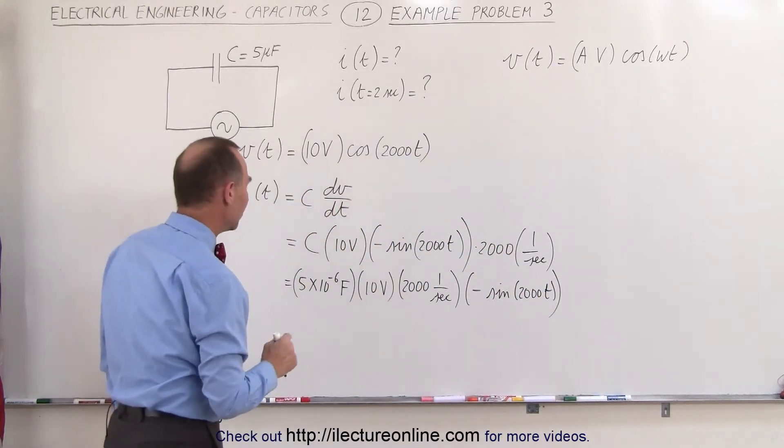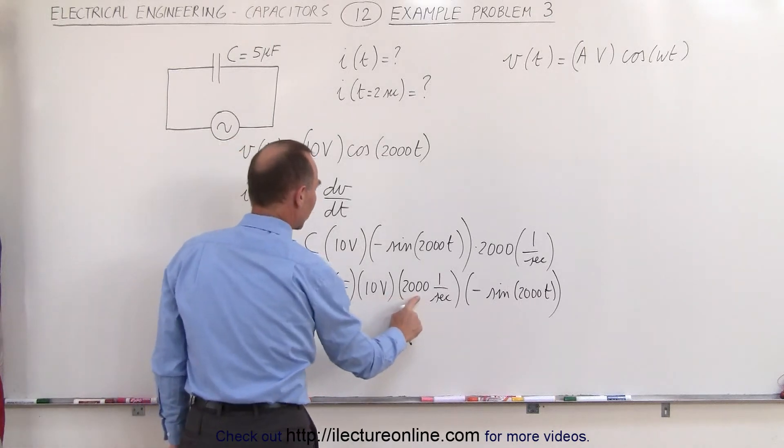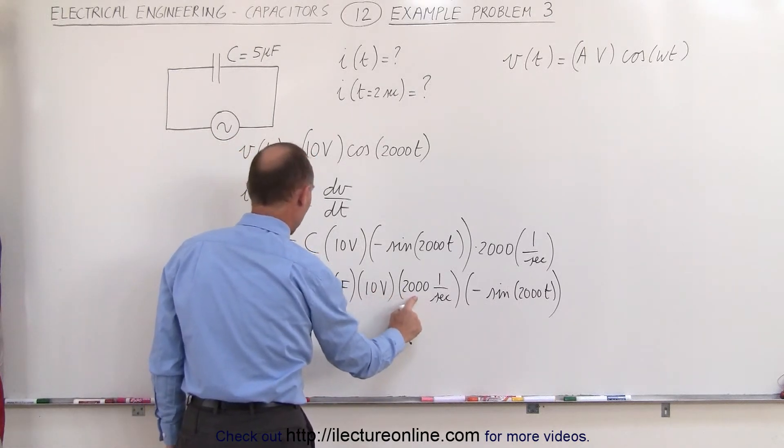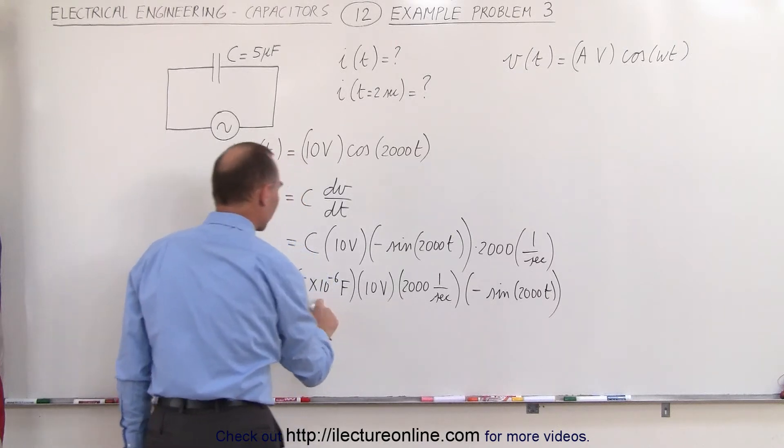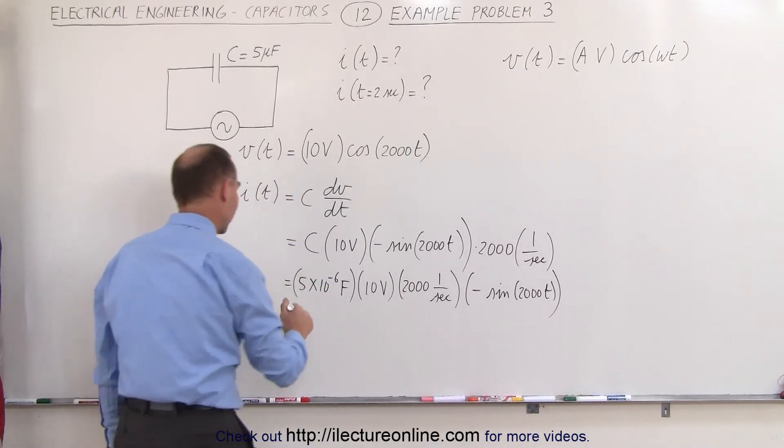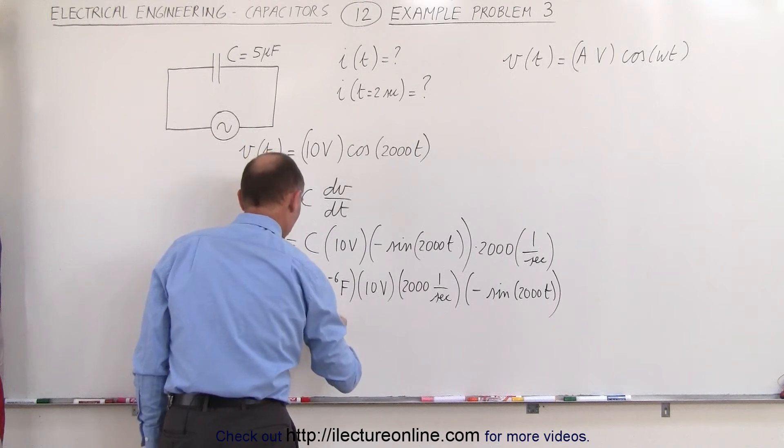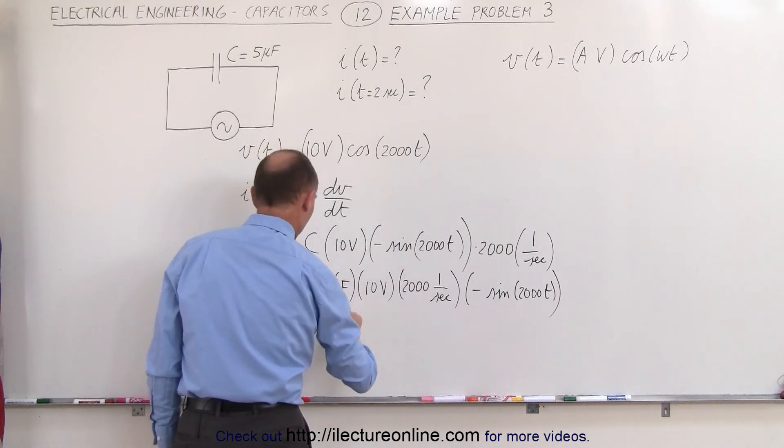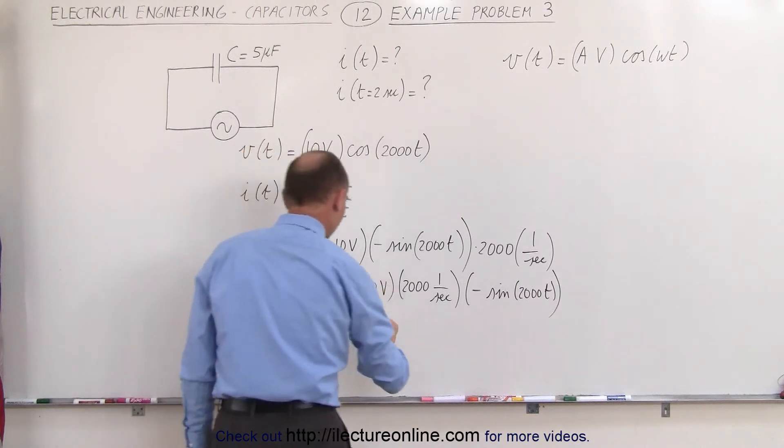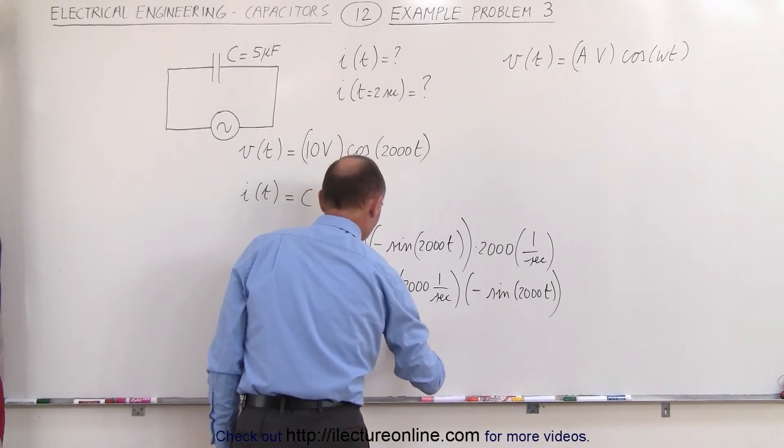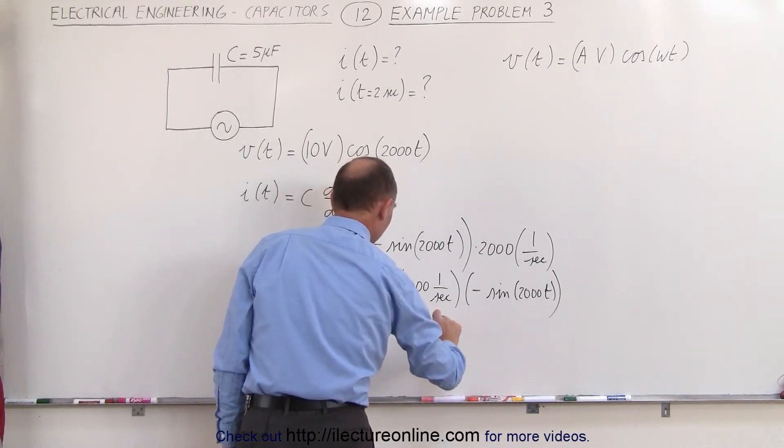Next we want to combine these, so 2000 times 10, that's 20,000 times 5, that's 100,000 times 10 to the minus 6. 100,000 times 10 to the minus 6, that would be equal to 0.1, that would be farads volts per second, farads times volts per second, multiply that times a negative sine of 2000t.